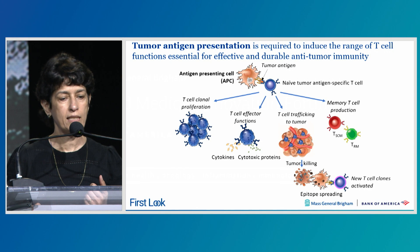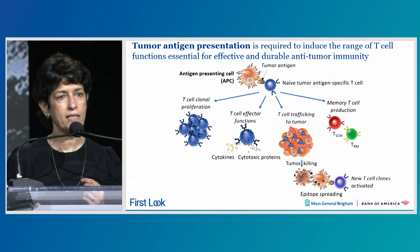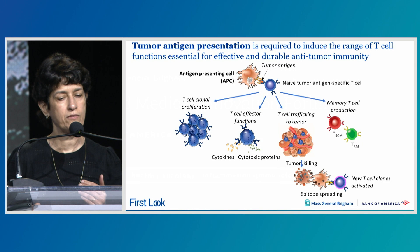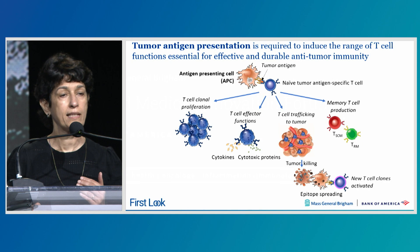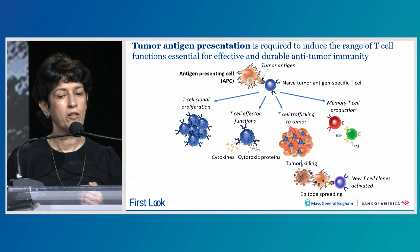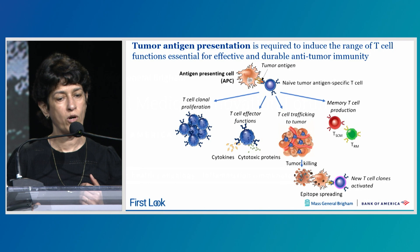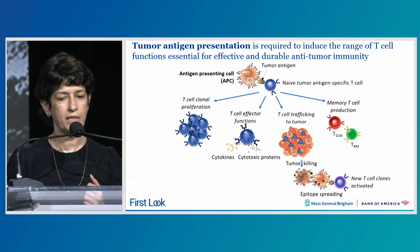T-cell interaction with APCs is also important for the generation of memory T-cells. Memory T-cells get rapidly activated—much more so than naive T-cells—which is important if the tumor reoccurs, and therefore are required for durable anti-tumor immunity.